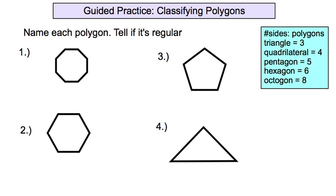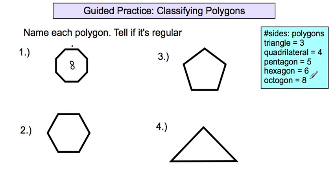Now we're going to name these polygons and tell whether or not they're regular. To name a polygon, you just count how many sides there are and apply the criteria. Counting the sides of the first figure carefully — starting from a marked point — there are eight sides. Eight-sided figures are called octagons, so that is an octagon.